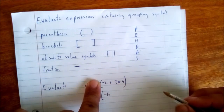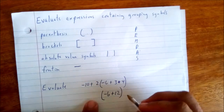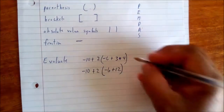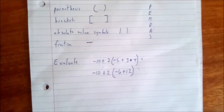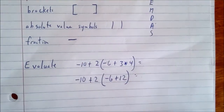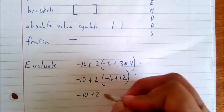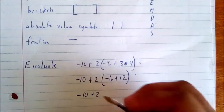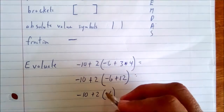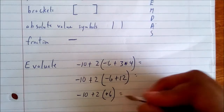We work that piece: bring down negative 6, then 3 times 4 gives us 12. Bring down the rest. Now we still have addition inside the parenthesis: negative 6 plus 12 gives us positive 6. You don't have to write the positive — that is understood.